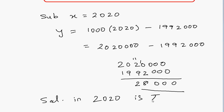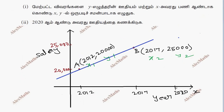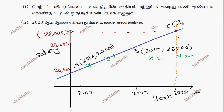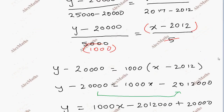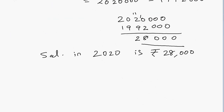So the result is Rs. 28,000. We can verify this on the graph — extending the straight line to x equals 2020, it meets the y-axis at 28,000. So the answer for part one is the linear function, and for part two the salary in 2020 is Rs. 28,000. Thank you.